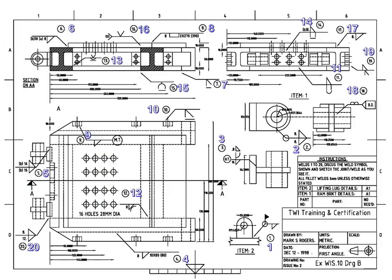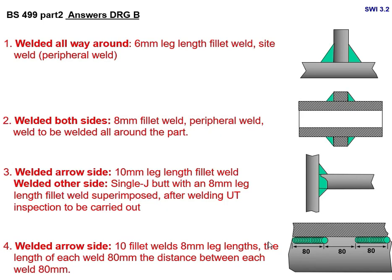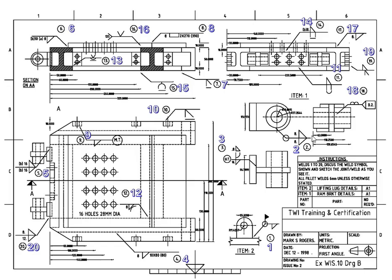Now for joint number 2, this is welded both sides: 8 mm fillet weld on one side and 8 mm fillet weld on the other side. This is a peripheral weld — weld to be welded all around the part. The symbol indicates 8 mm fillet weld, and you have to explain the symbol this way.